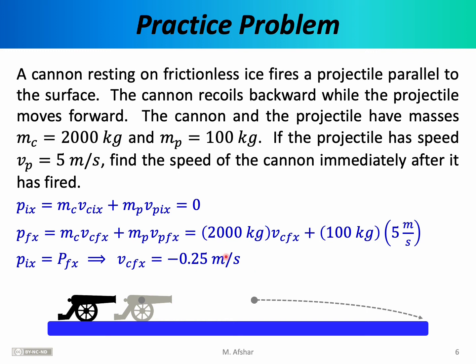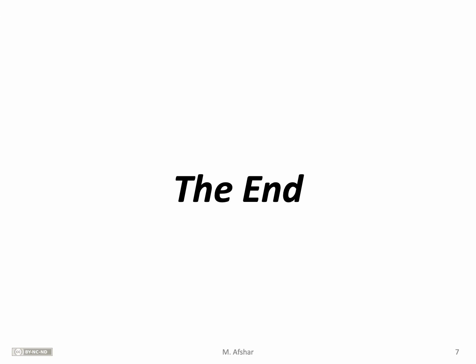As you can see, the cannon recoils with a smaller speed than the projectile — that makes sense, as the projectile moves forward much faster since it is a lighter object. Also, if you do the algebra carefully, you get a minus sign, which supports the fact that the cannon is recoiling in the negative x direction, and therefore its x velocity is a negative number. And that's the end of this lecture. Thank you for your attention.